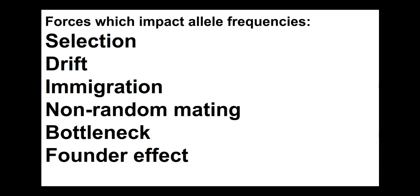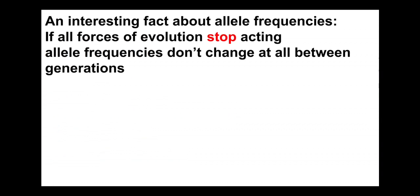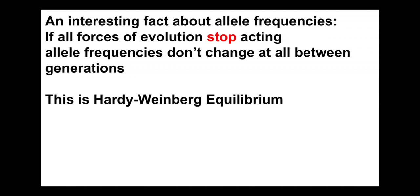Now an interesting thing is if all of these forces were to stop, then as long as a few other assumptions hold, allele frequencies won't change at all between generations — and that means that evolution has stopped. This is what we mean by Hardy-Weinberg equilibrium: the particular scenario when all forces of evolution stop and allele frequencies remain constant over time.